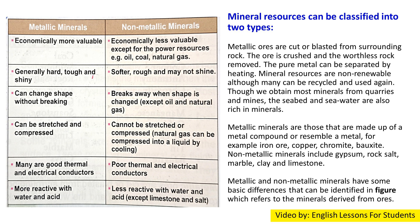Marble, limestone, salt and other rocks are not as valuable as other minerals, but Pakistan has very large amounts. Mineral resources can be classified into two types: metallic and non-metallic. Metallic ores are cut or blasted from surrounding rock; the ore is crushed and the worthless rock removed.